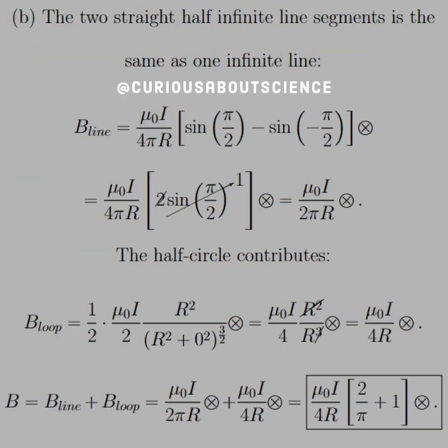All right, so similarly for B, we'll modify previous results and add them together. Thank you, superposition. So the two straight half infinite line segments is the same as just one infinite. So two plus one half equals one.